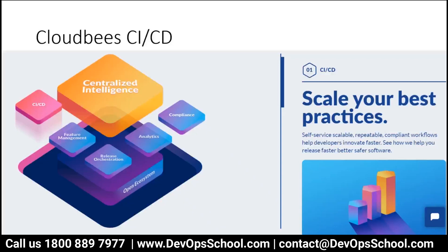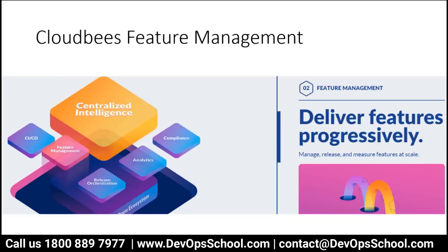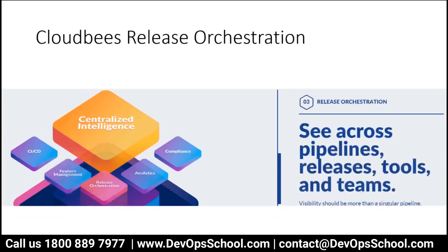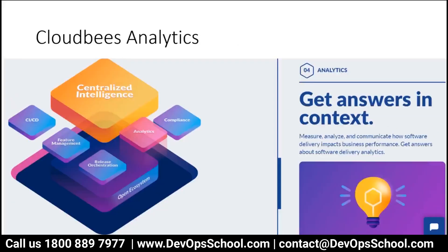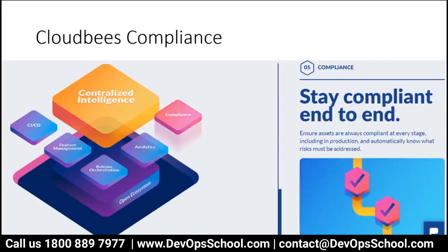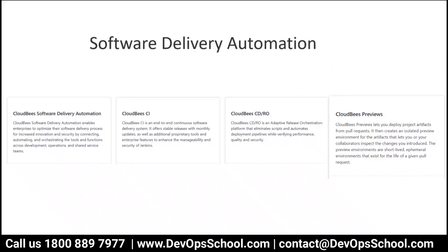One of their products is CloudBees CICD, which helps implement CI and CD capabilities. They also have feature management for delivering features progressively, release orchestration including cross-pipeline release tools and teams, analytics to measure and communicate how software delivery impacts business performance, and compliance. These are the five main capability areas in their product line.